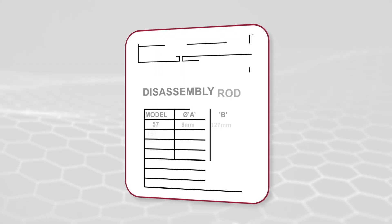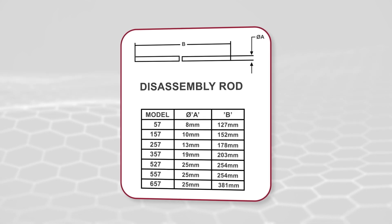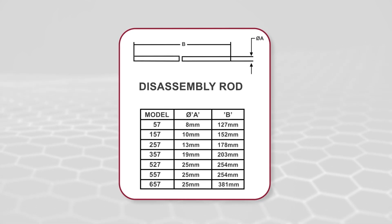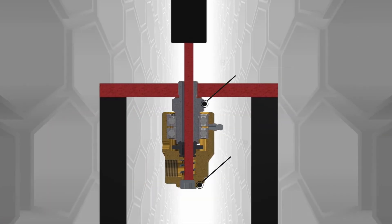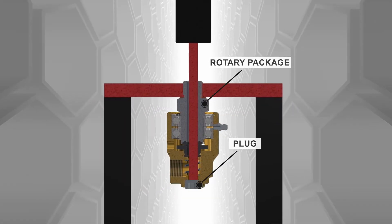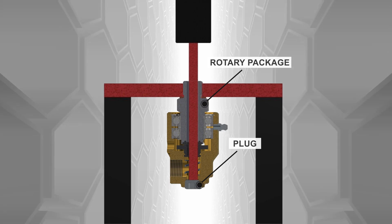You'll next need to make a disassembly rod. Refer to the chart for dimensions for your specific 57 Series model. Press on the plug with the disassembly rod to carefully remove the rotor package from the union.